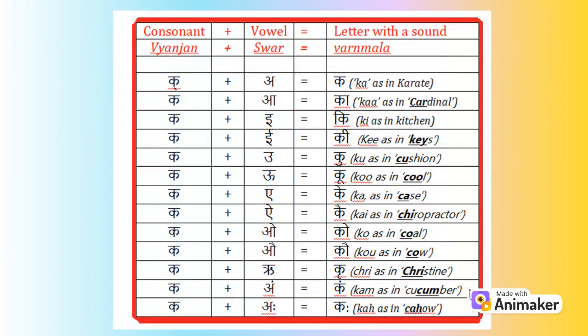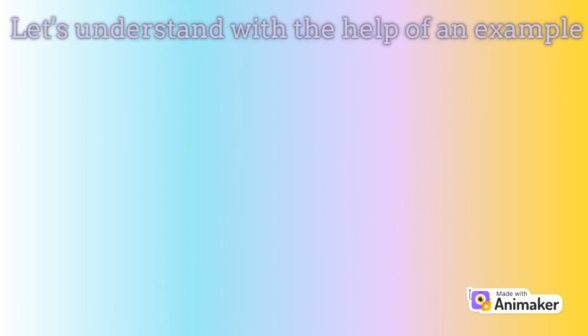This table shows how the sounds of Vyanjans and consonants change when different Swaras are added to the same consonant. Let's start with the first consonant of Hindi varnmala — the letter ka.